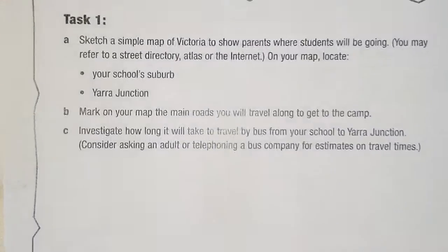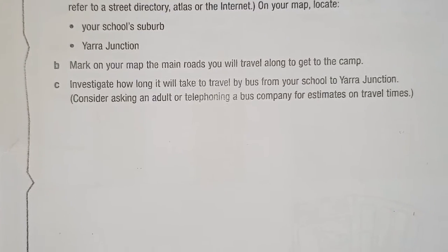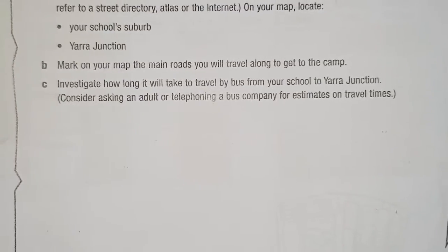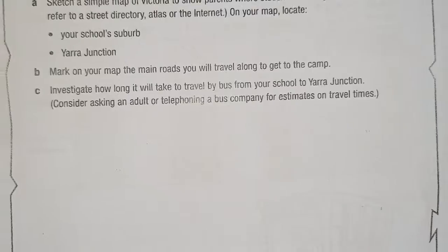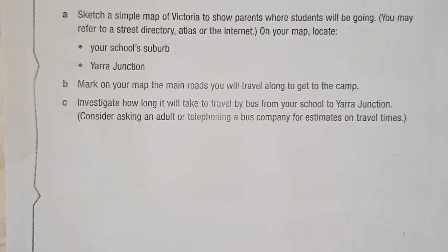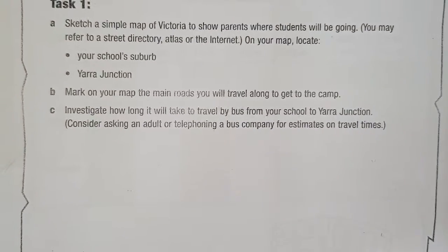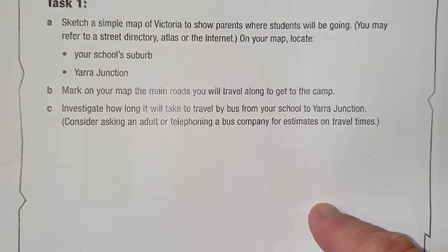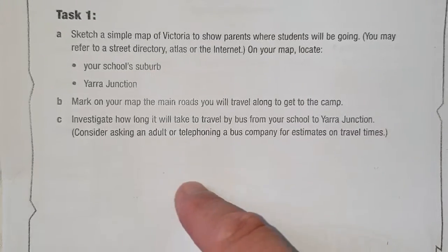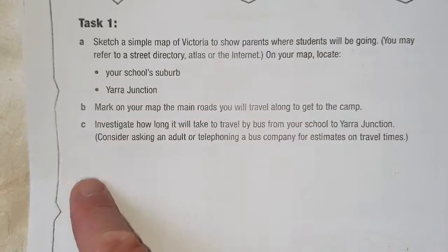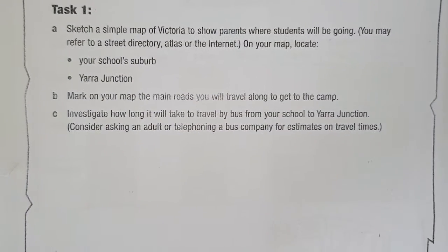The first task says to sketch a simple map of Victoria to show parents where students will be going. What I do is get my pencil, draw a little map of Victoria — it sort of goes off to the side here, comes up a little bit, and then comes down like that. Actually sketch it with your pencil.